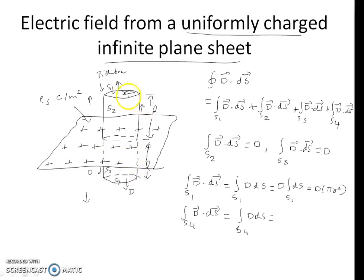An important point here is the flux density at a height L above the plane sheet is same as the flux density below the plane sheet which is at a distance L from the sheet of charge. Therefore, the value of D at S4 is same as the value of D at S1.